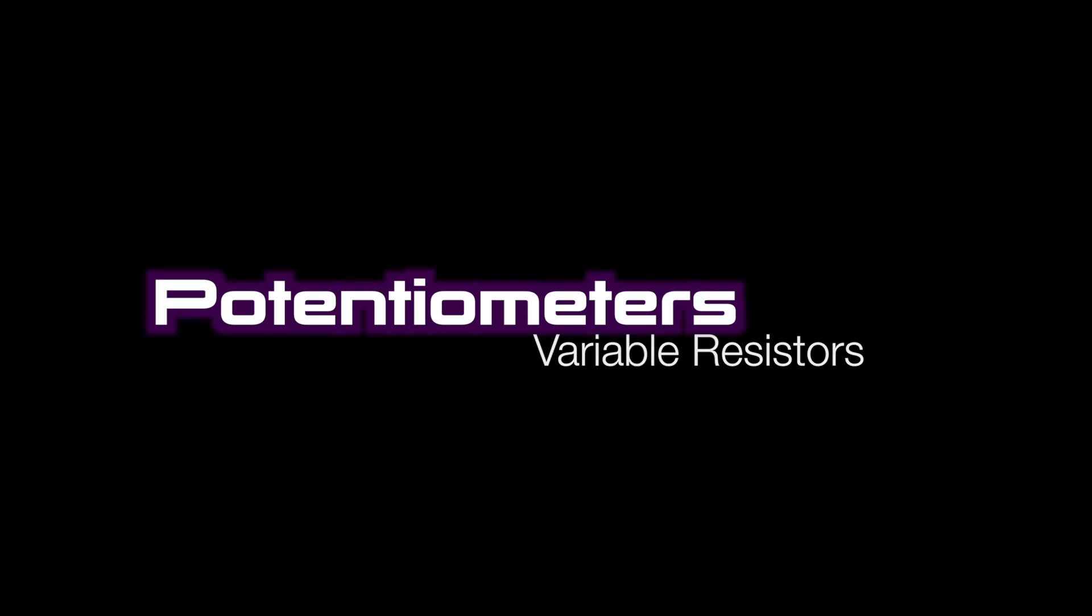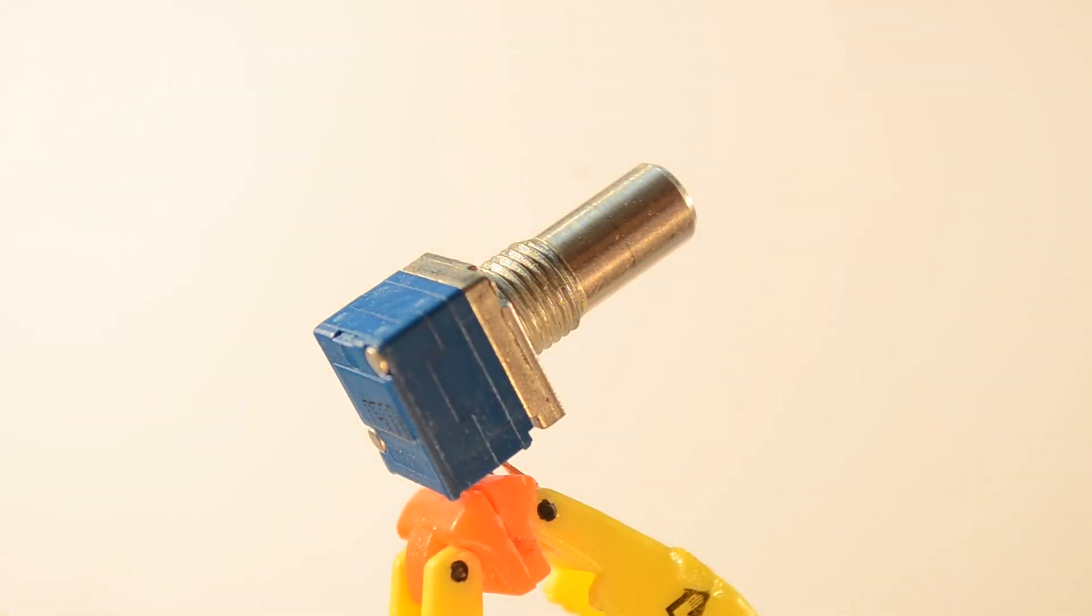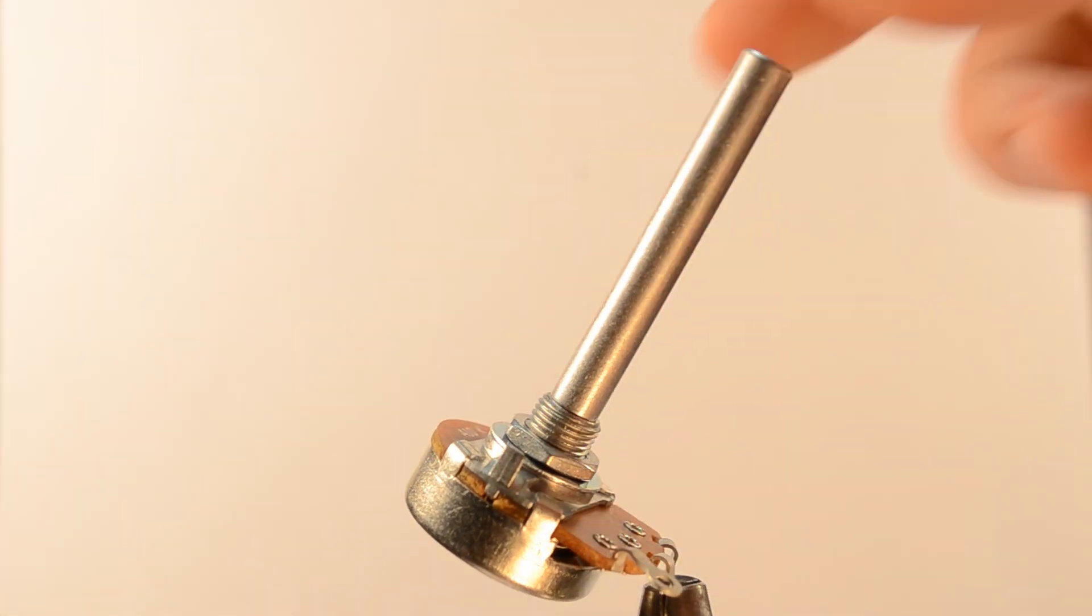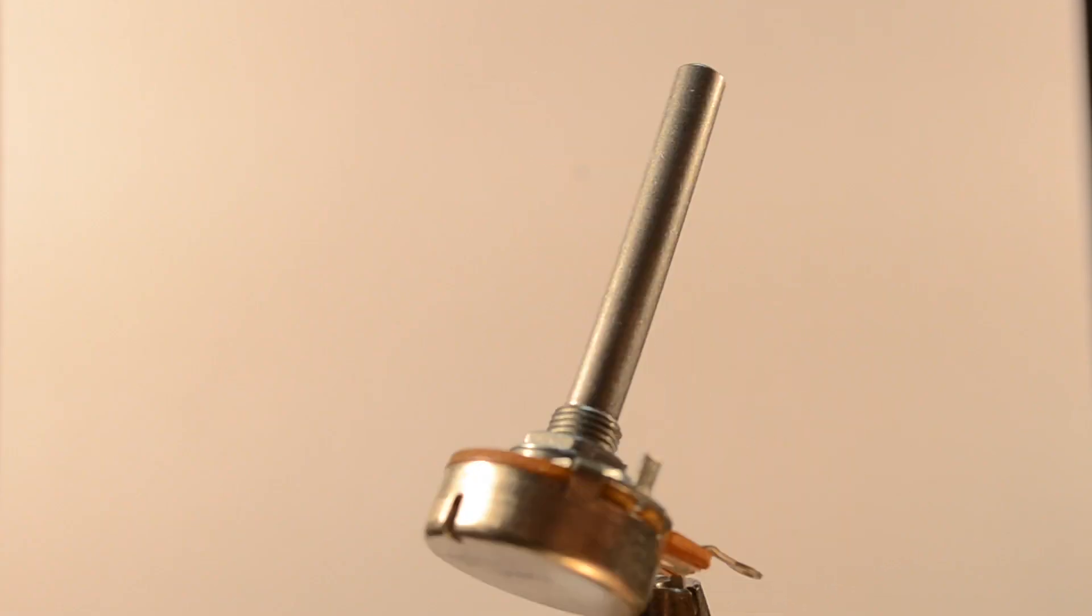We mentioned in the resistor video that resistors come in fixed and variable forms. You use a variable resistor when you want to move across a range of resistance values inside one component.